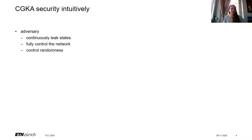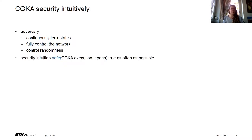Now, what does security mean intuitively? We target adversaries who continuously leak states and fully control the network — this is asynchronous and includes injecting, dropping, and reordering messages. We also model bad randomness generators. All of these adversary powers are explicitly mentioned in the MLS standard. With this adversary, the goal is to protect as many epochs as possible, using a safe predicate that takes an execution and an epoch and returns one when the epoch is secure. This generalizes the well-known properties of forward secrecy and post-compromise security.